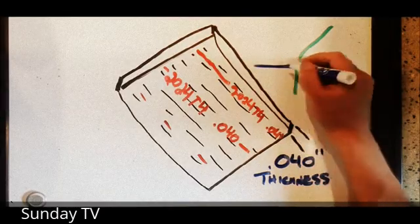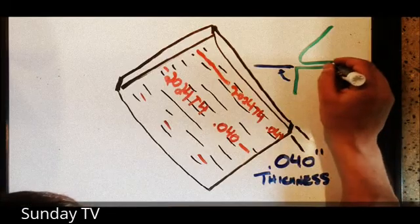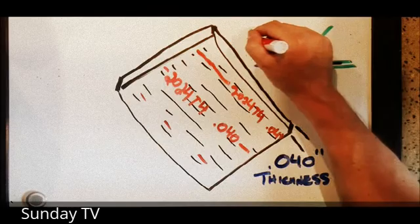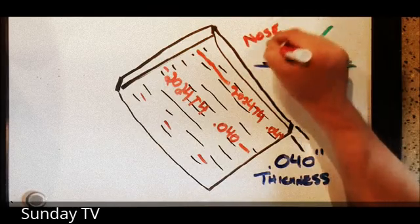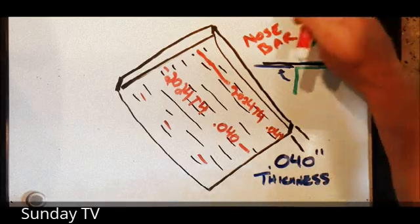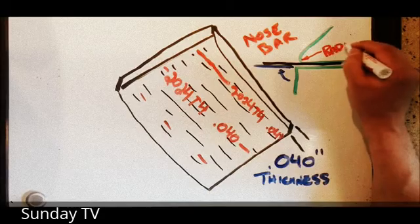We don't bend sheet metal over tight, like knife-edge type of bending brakes. We have a bending brake that has a nose bar on it that has a built-in radius. You can see that the nose bar, in this case, has a one-eighth radius on it.